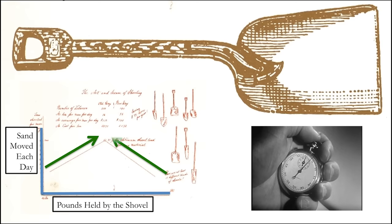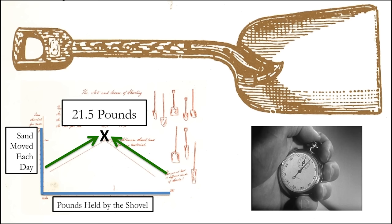Sure enough, the numbers went in the right direction again. And he settled on 21 and a half pounds — that was the perfect amount of sand or coal that you should fit in a shovel to move the most amount in a given day. That amount meant you could move it faster because it was a little lighter. It also meant that you could take fewer trips.